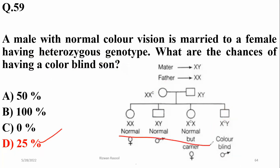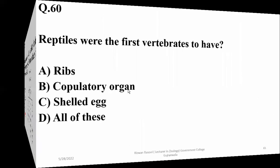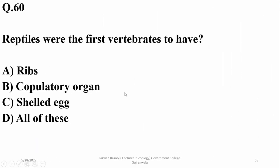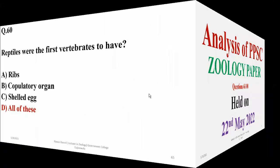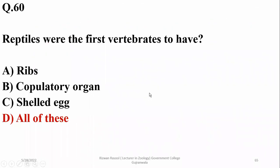The last question: reptiles are the first vertebrates to have ribs, a copulatory organ, and a shell. As you know, they are adapted to life on land. Next video inshallah — next 20 questions. Thank you for listening. Allah Hafiz.